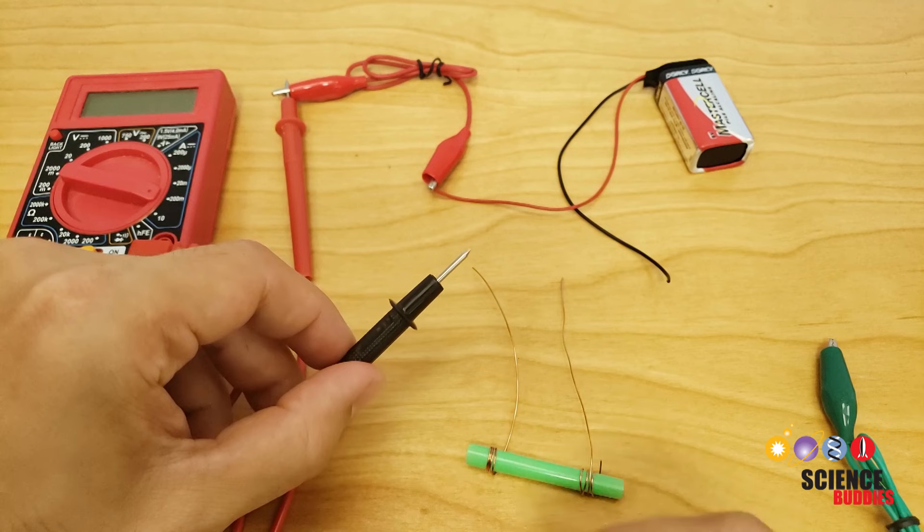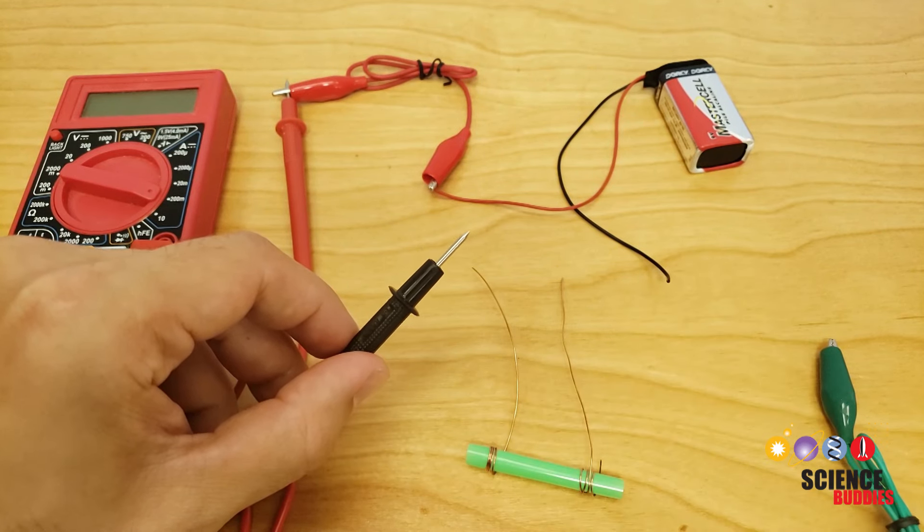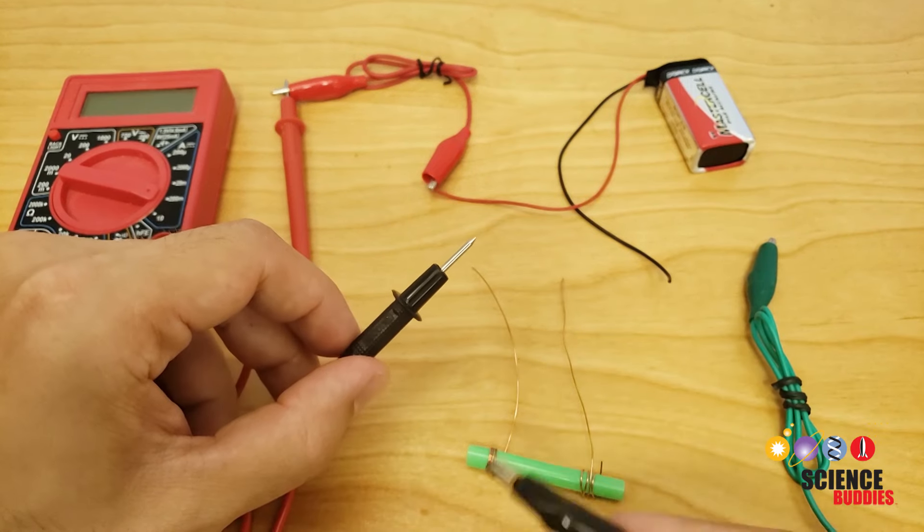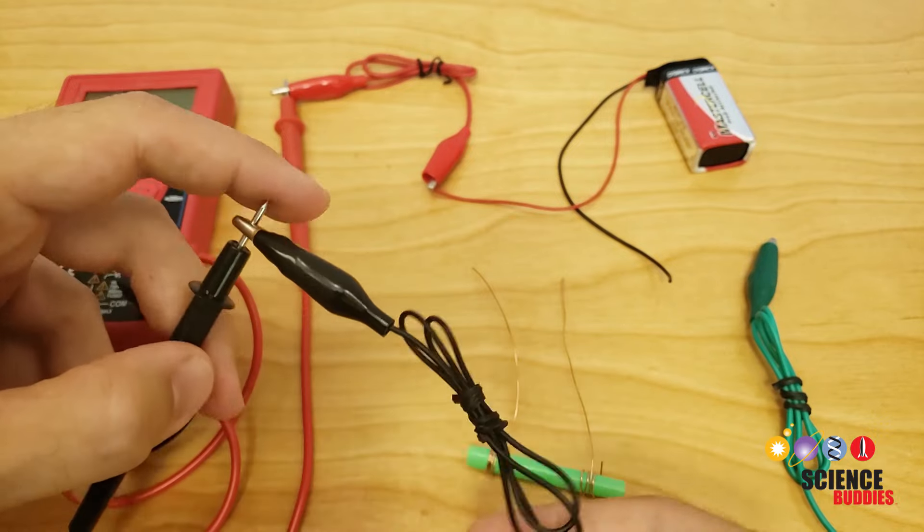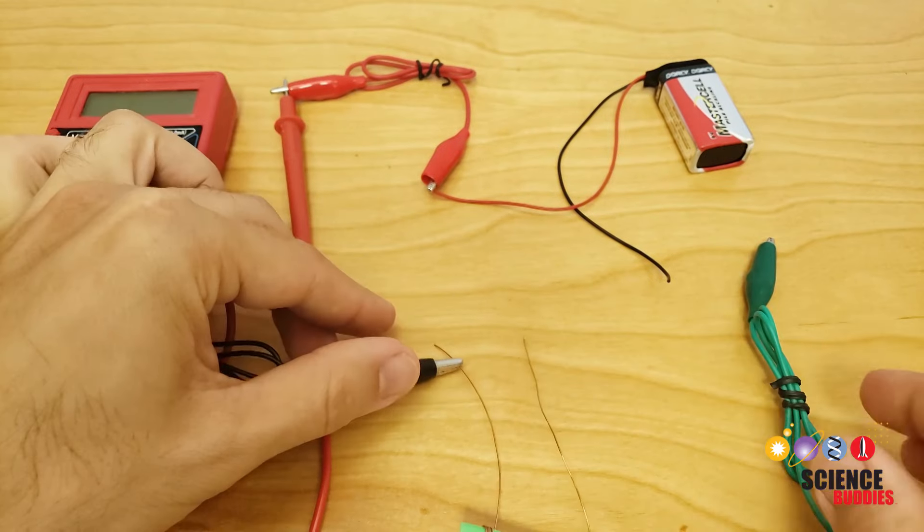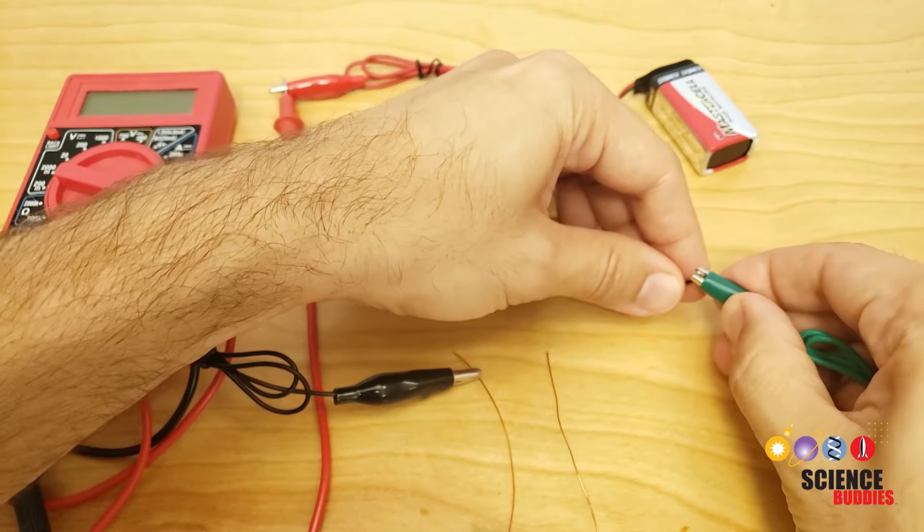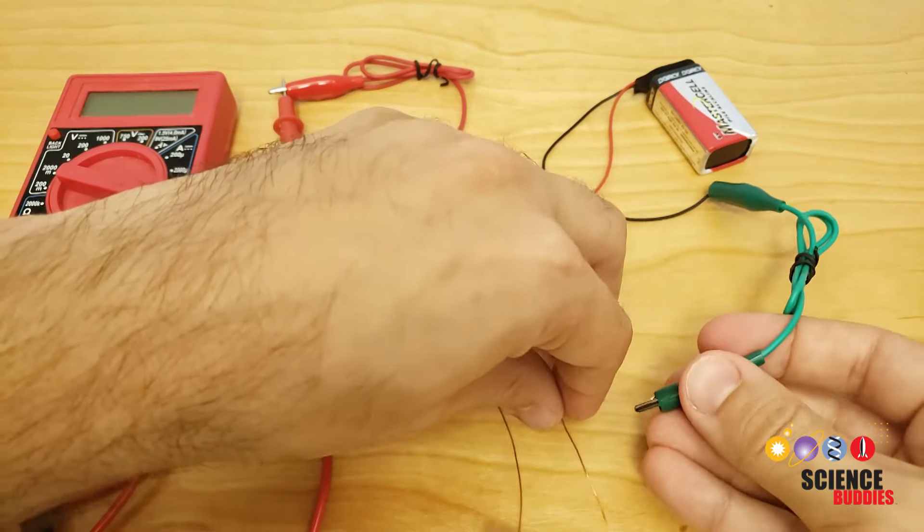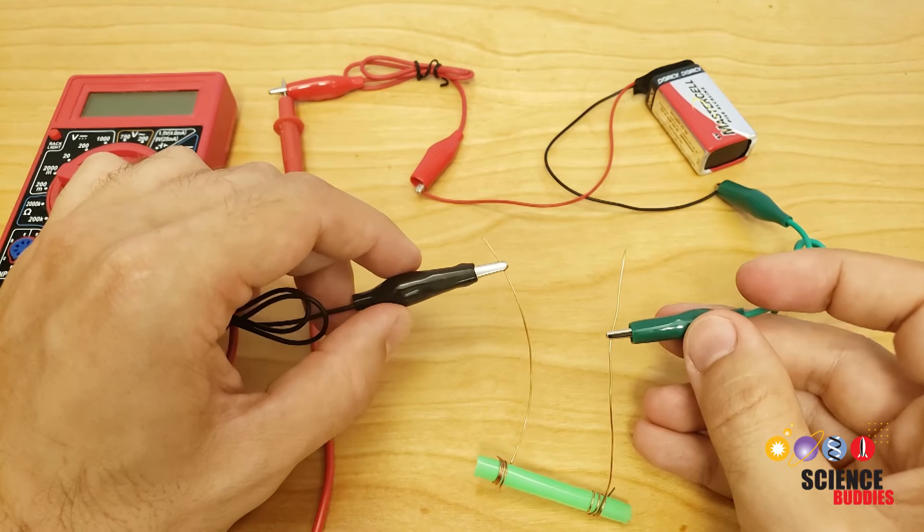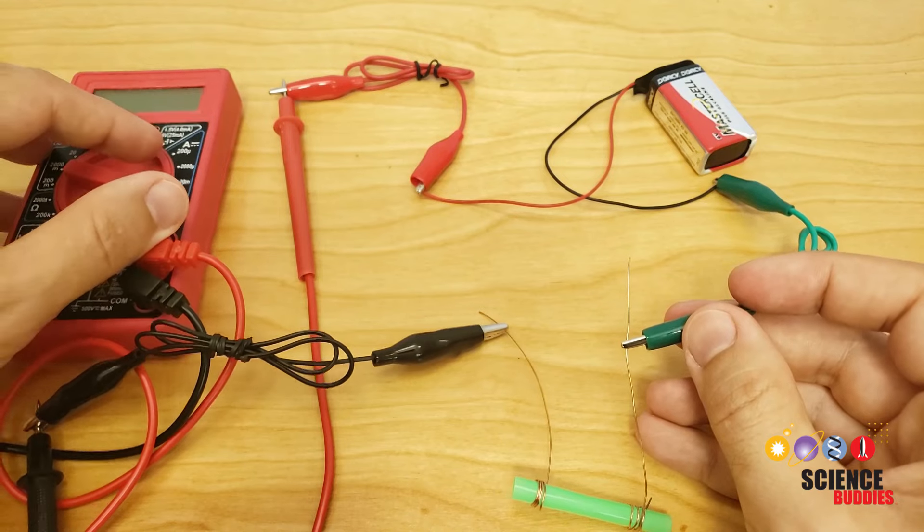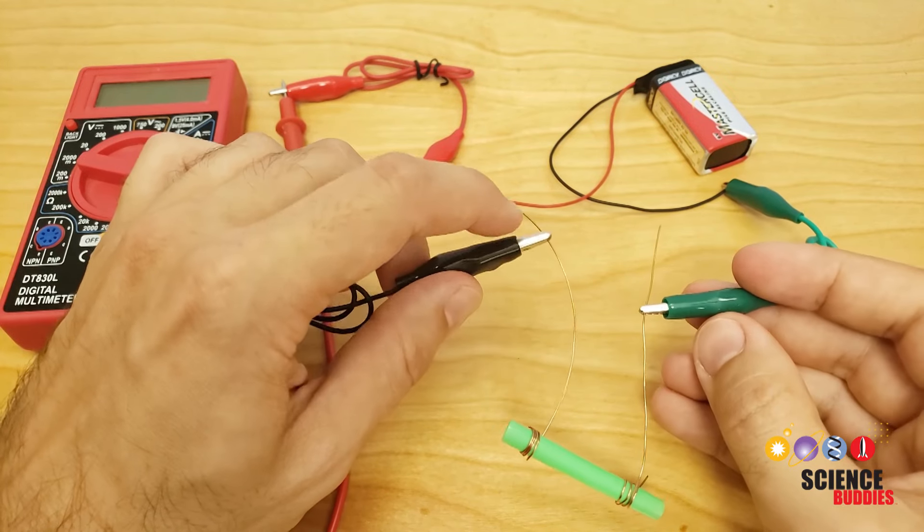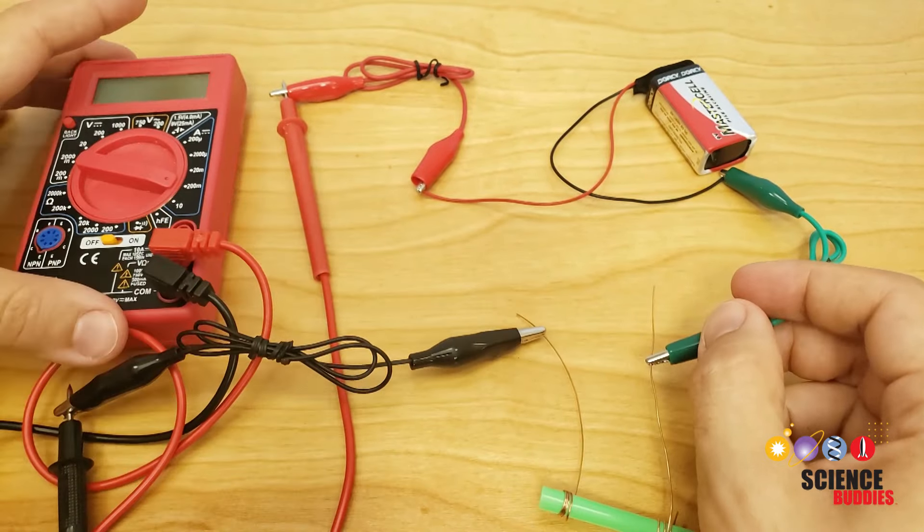You should have two remaining loose ends in your circuit, the black multimeter probe and the black wire from the battery. You are going to use your two remaining alligator clips to connect those wires to your conductivity sensor. So I'm going to connect one of them to the multimeter probe and then to one wire of the sensor and the other one to the battery wire and to the other wire of the sensor. Now, this is where it becomes very important not to let any of the loose pieces of metal in the circuit touch each other because this can create a short circuit and blow the fuse in your multimeter.